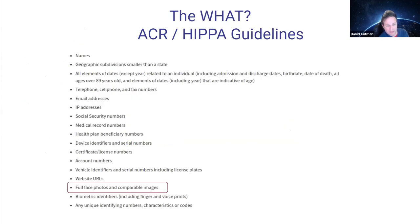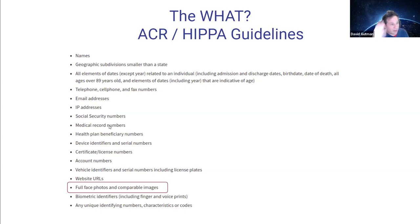There's already been a brief talk about the ACR and HIPAA guidelines. Some interesting things: any age over 89 years old needs to be removed according to HIPAA guidelines. A lot of things like email addresses, IP addresses, and security numbers may not seem like they'd be in imaging data, but if these are clinical patients and somehow this was pulled over when the scan was created, this stuff could show up.